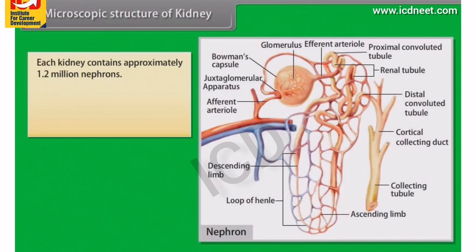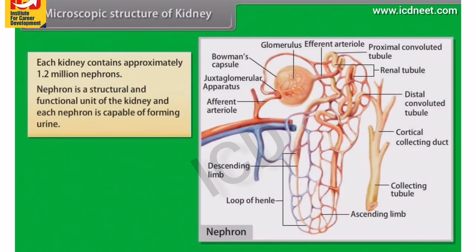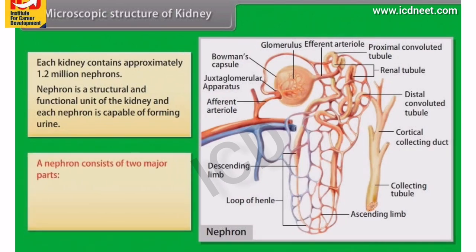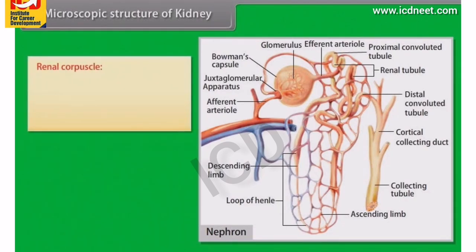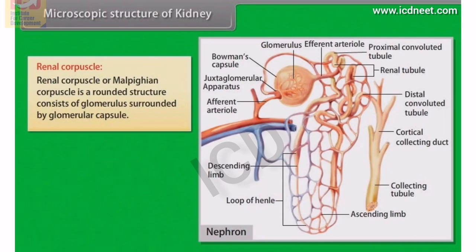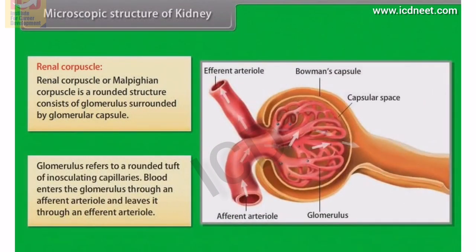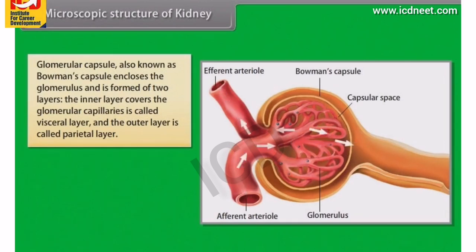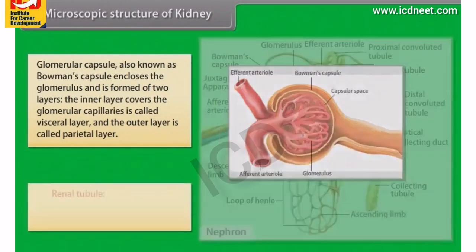Each kidney contains approximately 1.2 million nephrons. The nephron is the structural and functional unit of the kidney, and each nephron is capable of forming urine. A nephron consists of two major parts: the renal corpuscle and the renal tubule. The renal corpuscle, also called the Malpighian corpuscle, is a rounded structure consisting of the glomerulus surrounded by the glomerular capsule. The glomerulus is a rounded tuft of anastomosing capillaries. Blood enters the glomerulus through an afferent arteriole and leaves through an efferent arteriole. The glomerular capsule, also known as Bowman's capsule, encloses the glomerulus and is formed of two layers: the inner visceral layer covering the glomerular capillaries, and the outer parietal layer.